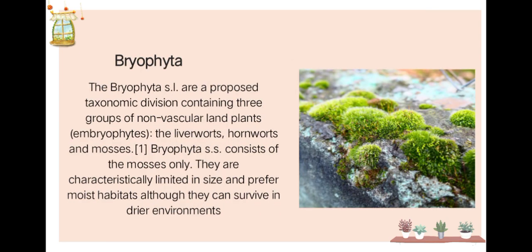Bryophyta are a proposed taxonomic division containing three groups of non-vascular land plants: the embryophytes or liverworts, hornworts, and mosses. Bryophyta strictly consists of mosses only. Mosses lack xylem and phloem. They are characteristically limited in size and prefer moist habitats, although they can survive in drier environments.